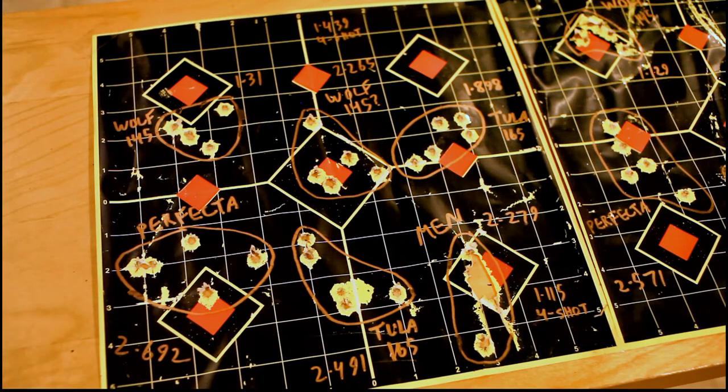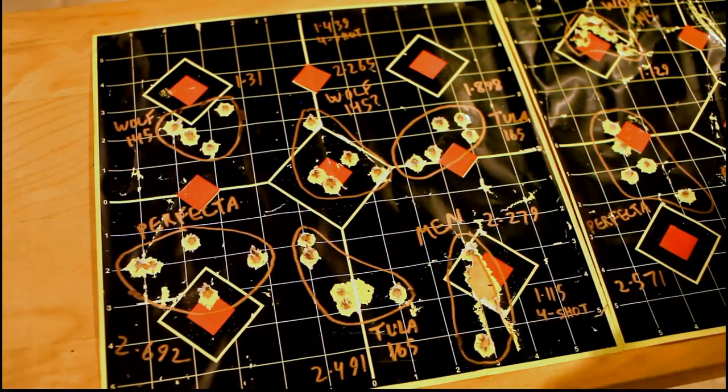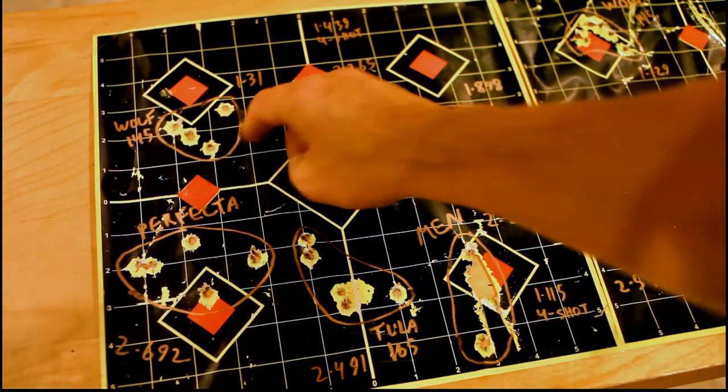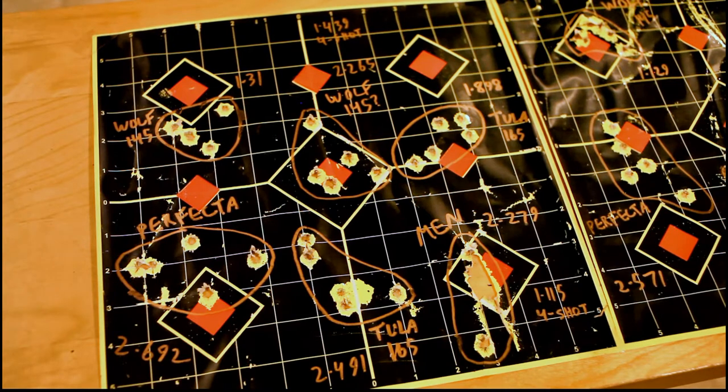I'm going to start off with cheap stuff, which I'm particularly fond of because I'm cheap. These are all 5-shot groups shot at 100 yards. The Wolf 145s did a 1.3 MOA group, not too shabby for really cheap stuff. It's about 34 cents a round.